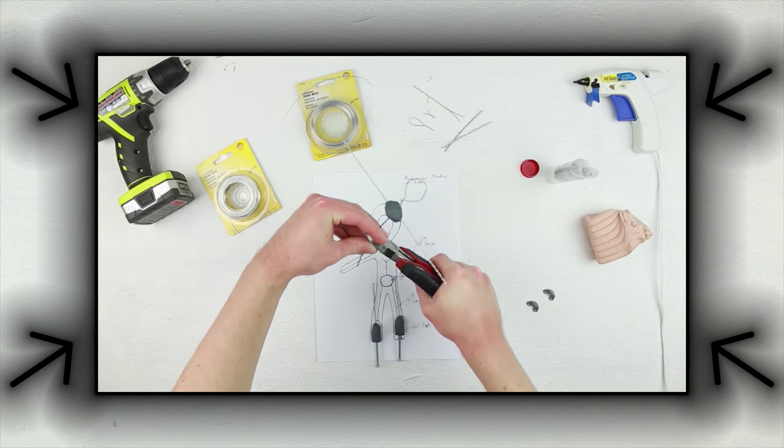Last episode we went over the steps to create the armature of the puppet, and this episode we're going to finish off the puppet with all the nice felt and make it look all fancy and cute. Let's go!